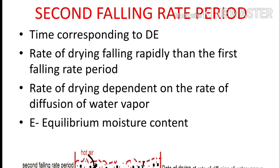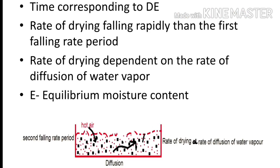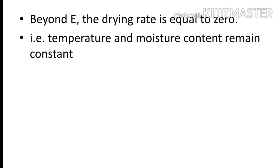The time corresponding to DE is known as the second falling rate period. Here the rate of drying falls more rapidly than in the first falling rate period. The rate of drying depends on the rate of diffusion of water vapor — only when water diffuses out can it be evaporated and drying occur. At the end of the second falling rate period is point E, the equilibrium moisture content. Beyond point E, the drying rate is equal to zero, and both temperature and moisture content remain constant.